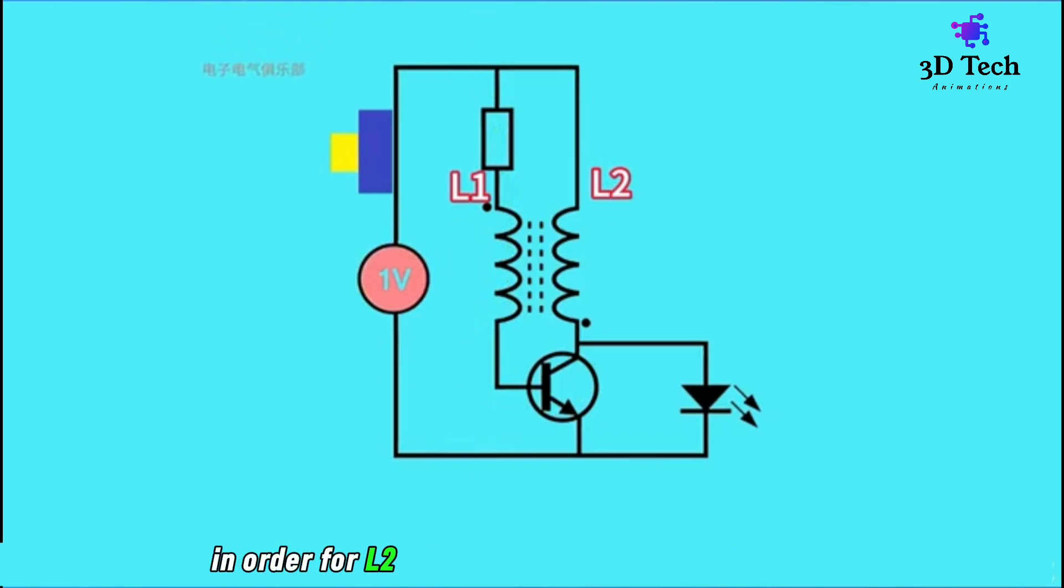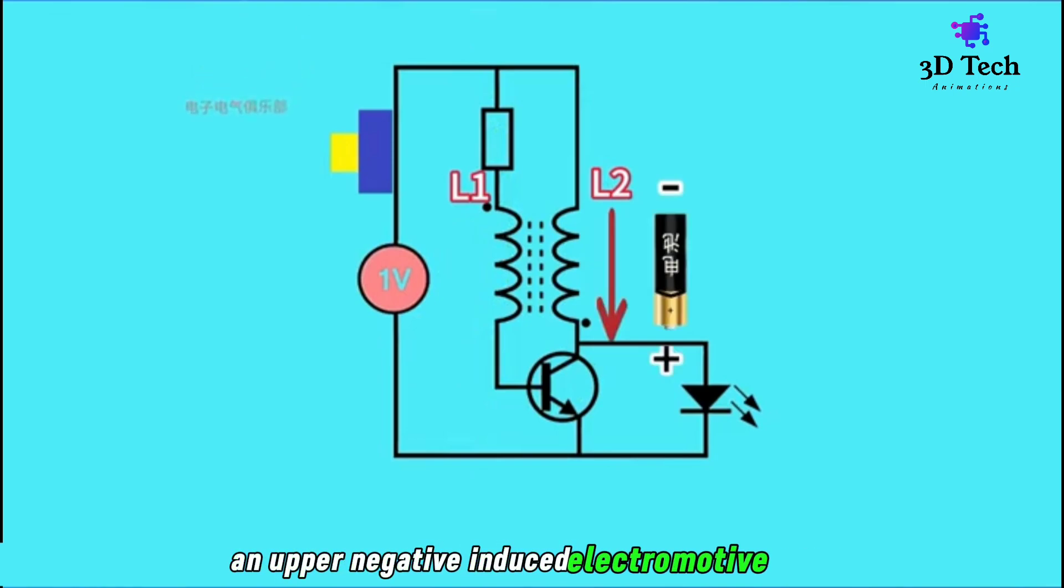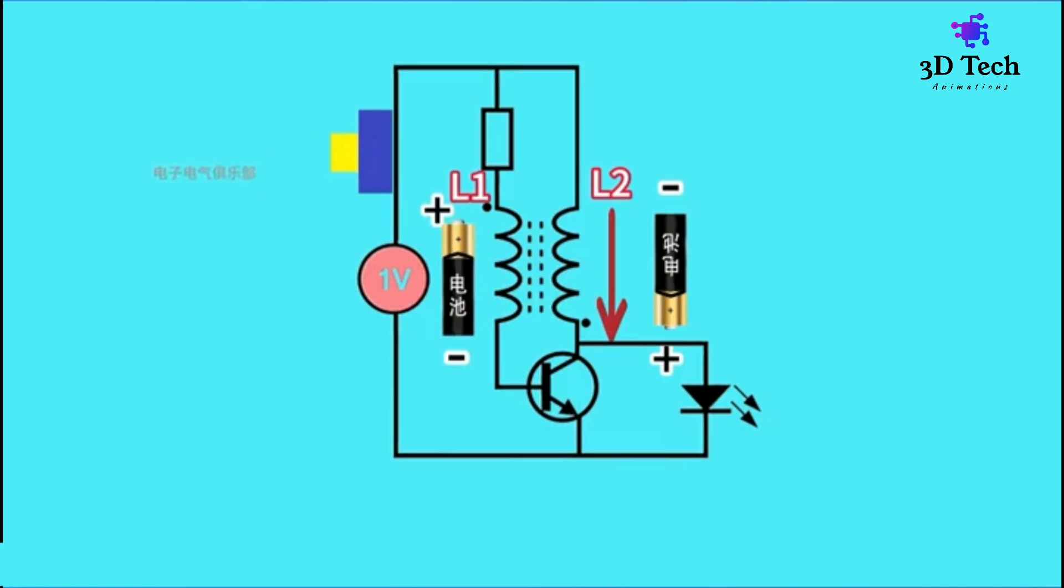However, L2 tries to continue increasing the current, inducing an upper negative and lower positive electromotive force. In the same way, L1 induces an upper negative electromotive force, so the transistor turns off quickly.